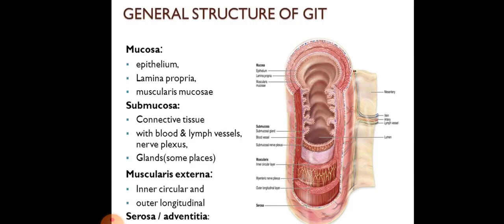First you should know about the general structure of the GIT — gastrointestinal tract, that is your digestive system. There are four layers in the GIT. The innermost is the mucosa, which contains epithelium, below that lamina propria, and below that the muscularis mucosa. So these are the three layers of the mucosa.